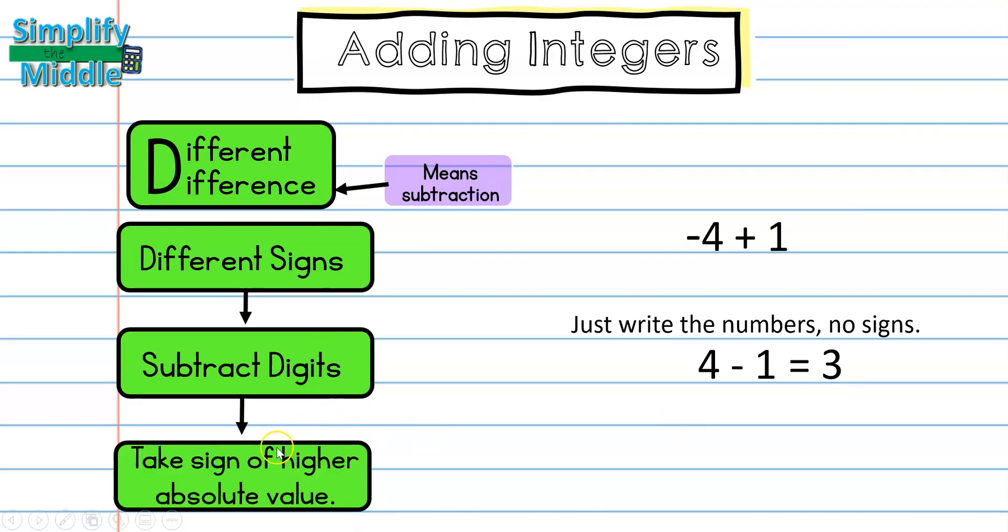So, we're going to find that out by taking the sign of the higher absolute value. So, we have to find the absolute value for both negative 4 from the original problem and 1 from the original problem. I know that negative 4 is a distance from 0 of 4 and negative 1 is a distance from 0 of 1.